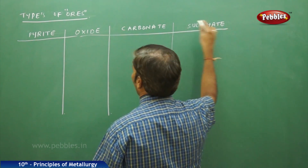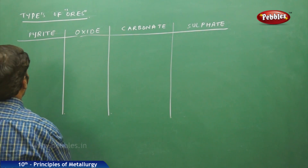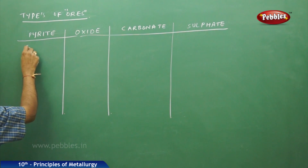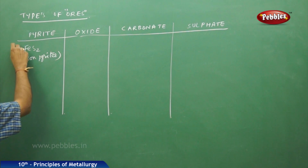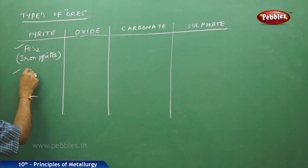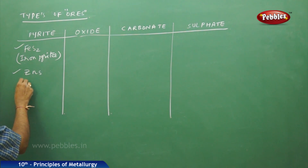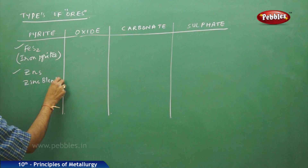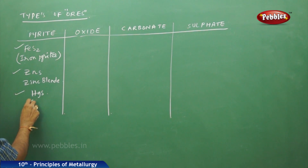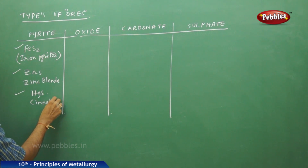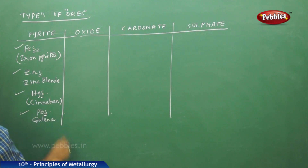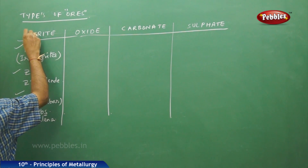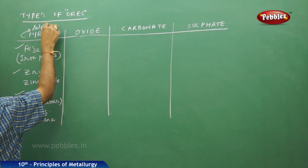For pyrite ores, examples include FeS2 (iron pyrites), ZnS (zinc blende), HgS (cinnabar), and PbS (galena). In all cases, pyrite ores contain sulphur — all pyrites are made up of sulphur content.